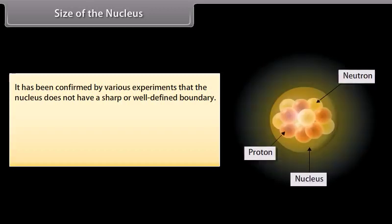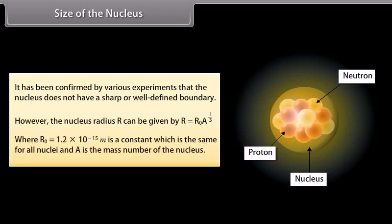Size of the nucleus. It has been confirmed by various experiments that the nucleus does not have a sharp or well defined boundary. However, the nucleus radius R can be given by R is equal to R₀ into cube root of A, where R₀ is equal to 1.2 × 10⁻¹⁵ m is a constant which is the same for all nuclei, and A is the mass number of the nucleus.